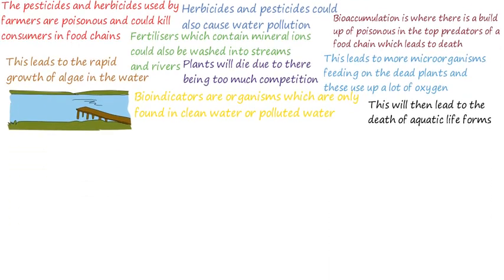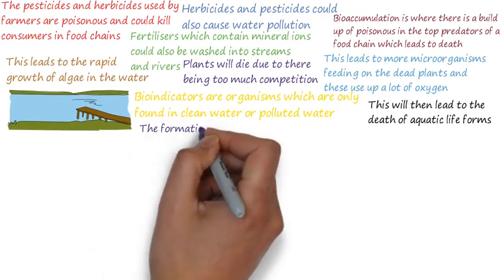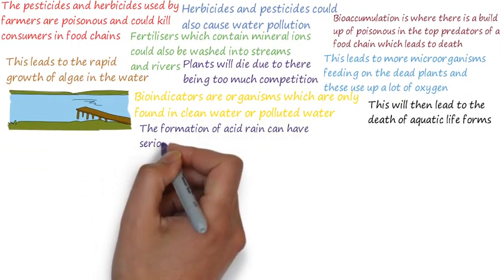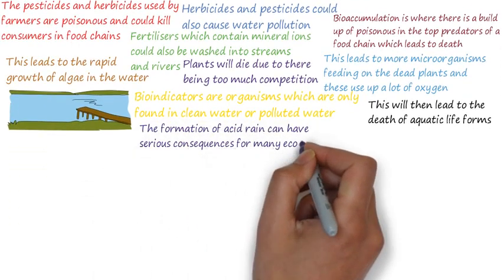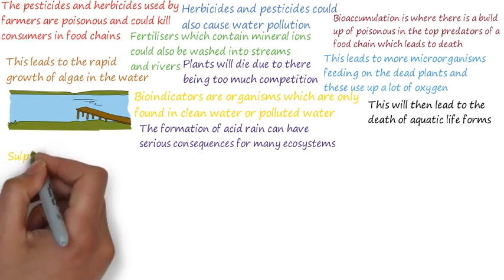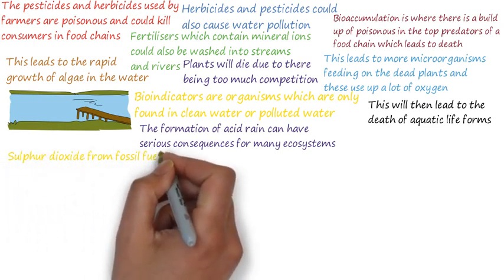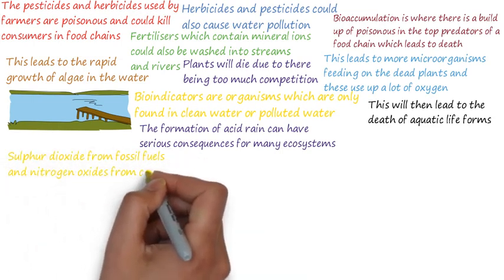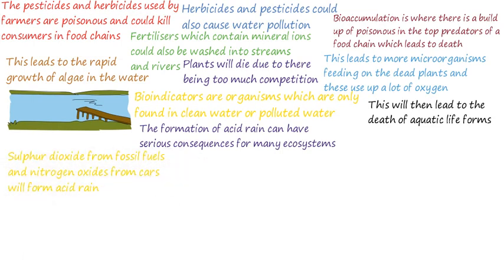Air pollution is another issue for humans. The formation of acid rain can have some serious consequences for many ecosystems. When fossil fuels are burned, the sulfur impurities contained within the fuel will react with oxygen and form sulfur dioxide.